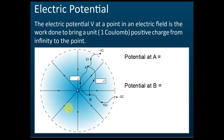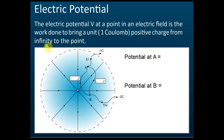The electric potential at a point in an electric field is the work done to bring one unit of positive charge from infinity to that point. Note that infinity doesn't mean very far away — infinity means outside the field. It can be just a few metres away, as long as it's outside the field.